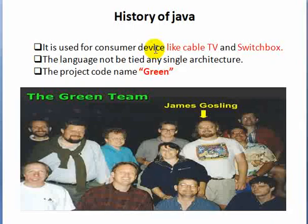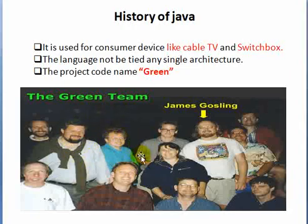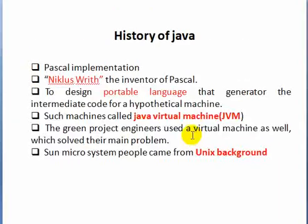The language is very small and the code is very tight. The name of the project is Green. The green team is also called James Gosling. They were ready for the implementation of Pascal, and the name of Pascal is Nicholas.